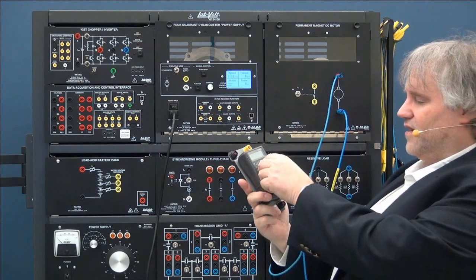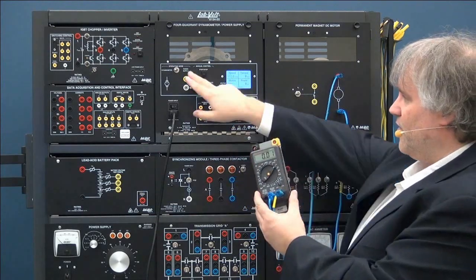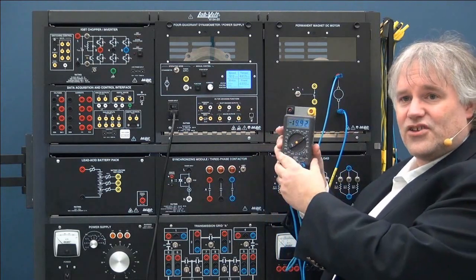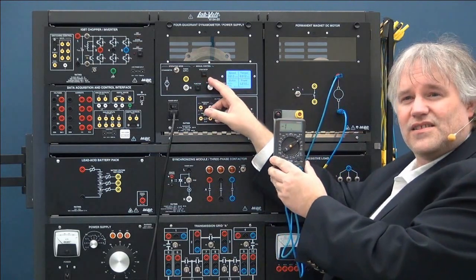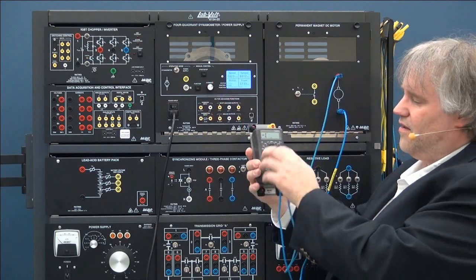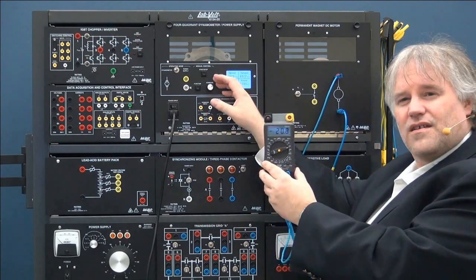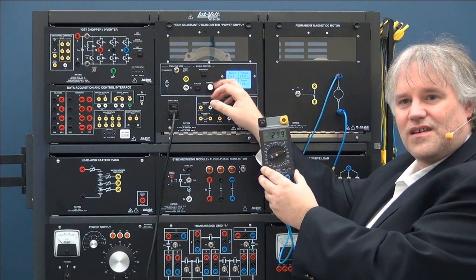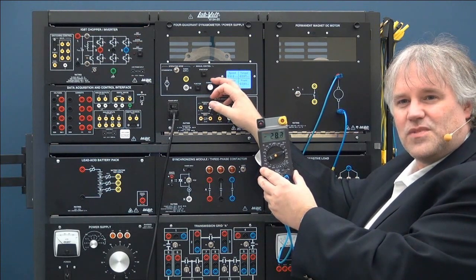So if I connect for example directly on the machine here, I put it in voltage mode. When I make the machine turn I will see that the actual voltage depends on the speed that my motor goes to. So more speed basically gives me more voltage.